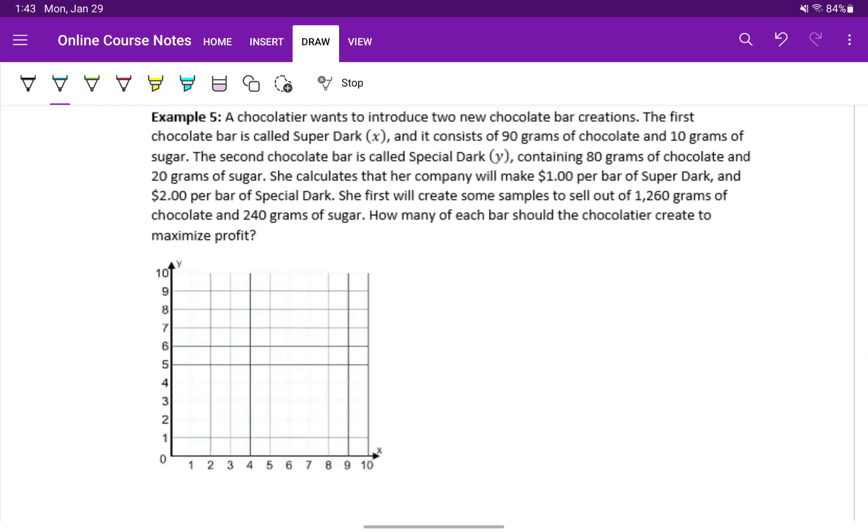In example five, a chocolatier wants to introduce two new chocolate bars. One uses 90 grams of chocolate and 10 grams of sugar. The other uses 80 grams of chocolate and 20 grams of sugar. She calculates that she'll make $1 per bar of the first brand, $2 per bar of the second brand. And she has some fixed amounts of chocolate and sugar that she wants to use to make up some test bars.